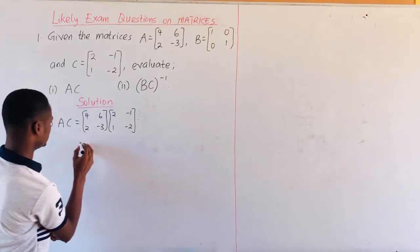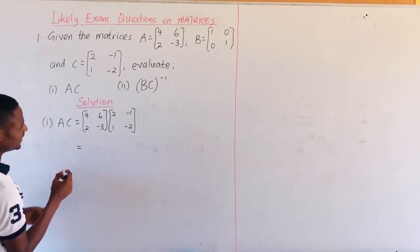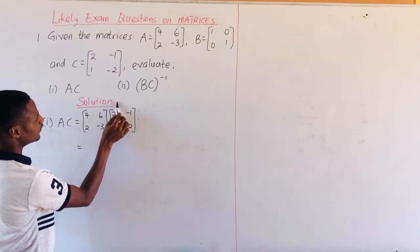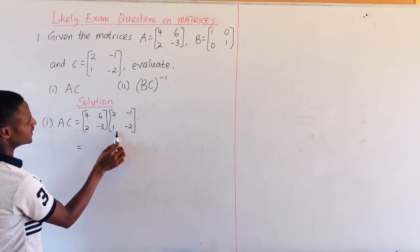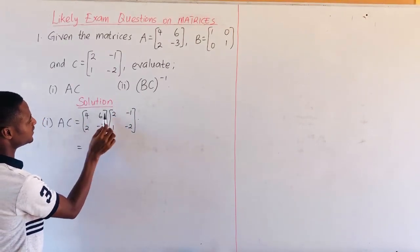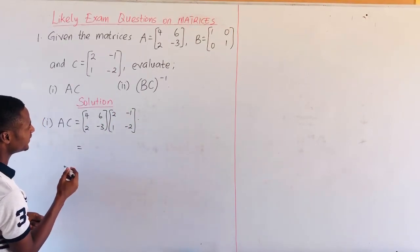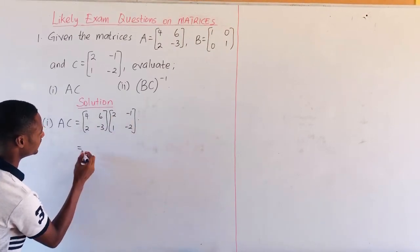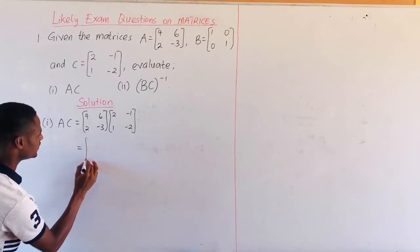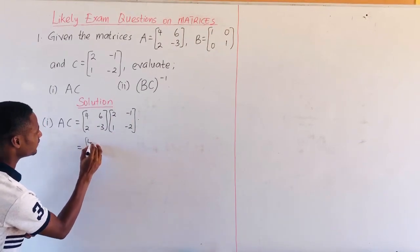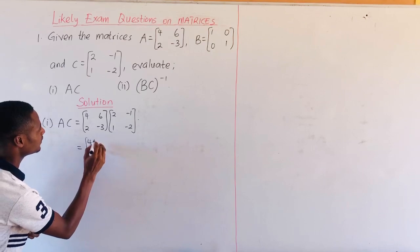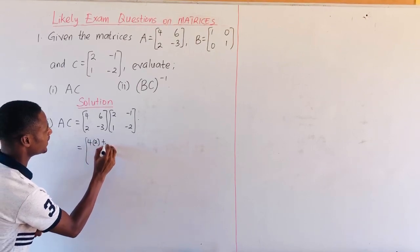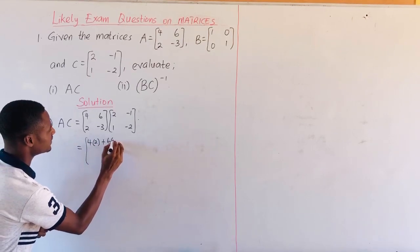In multiplying matrices, we multiply the columns in the second matrix by the rows in the first matrix — row times column. That will give us 4 times 2 plus 6 times 1.